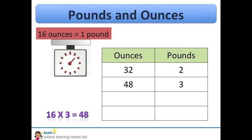16 times 3 is 48. So 3 pounds is equal to 48 ounces. 16 times 4 is 64. So 4 pounds equals 64 ounces. And finally, 16 times 5 equals 80. How many ounces are in 5 pounds? Right! 5 pounds is equal to 80 ounces.